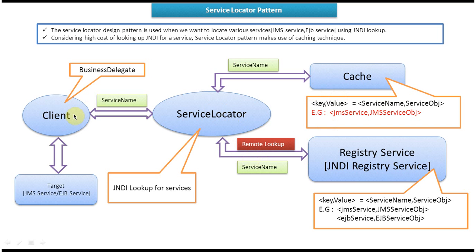Now suppose the client asks for the EJBService object. It sends the service name EJBService to the Service Locator. The Service Locator checks the cache — only JMSService is there, EJBService object is not present. So it does a remote lookup in the JNDI Registry and retrieves the EJBService object. The Service Locator adds the EJBService object to the cache, then returns it to the client. After this, whenever the client asks for JMSService or EJBService, the service object will always be returned from the cache without a remote lookup, improving performance.